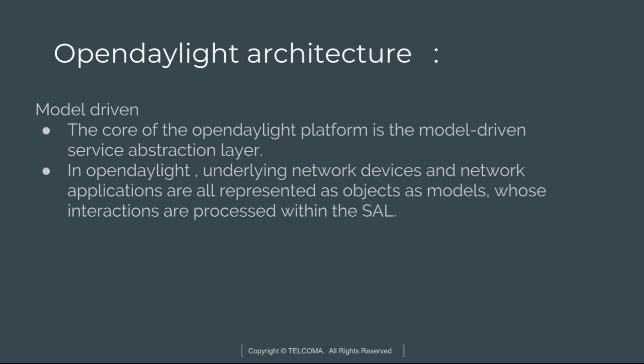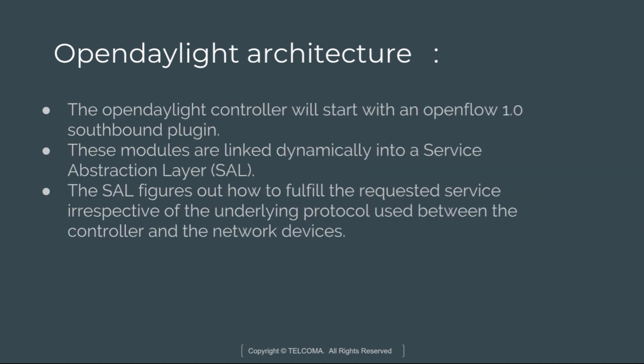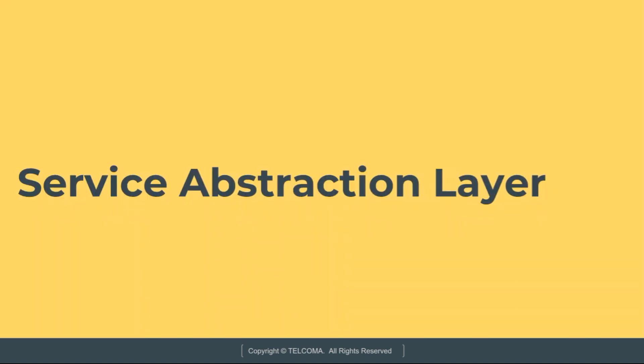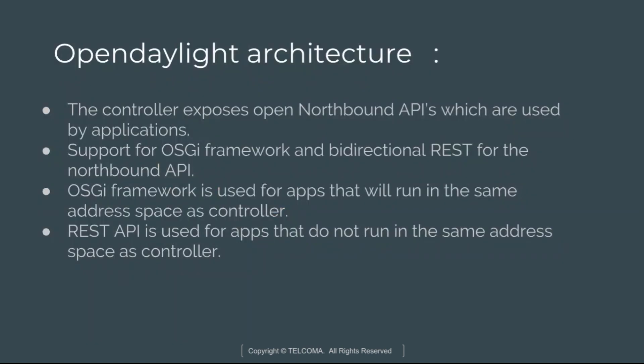In OpenDaylight, underlying network devices and network applications are all represented as objects which are defined as models, whose interactions are processed within the service abstraction layer. We have OpenFlow 1.0 and OpenFlow 2.0; this controller starts with OpenFlow 1.0 and southbound plugins, which are linked dynamically into the service abstraction layer. The SAL basically figures out how to fulfill the requested service irrespective of the protocol used between the controller and various devices. This is about the OpenDaylight architecture — we will continue with the SAL in our next class.